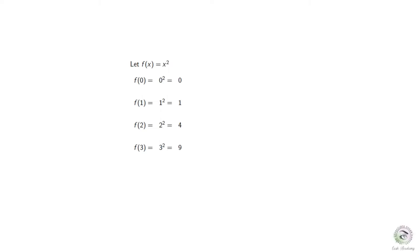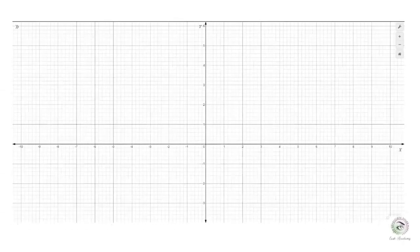Observe that the output of a function changes as the input changes. The limit of the function f at point p describes the behavior of the output f(x) as x moves closer and closer to p. Before going on to the limit, let's take a close look at the movement of x values.